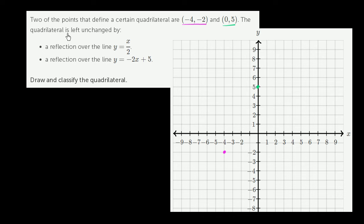The quadrilateral is left unchanged by a reflection over the line y is equal to x over 2. So what does that line look like? I'll do that in blue. The y-intercept is 0 and the slope is 1 half. Every time x increases by 1, y will increase by 1 half. Or when x increases by 2, y will increase by 1.